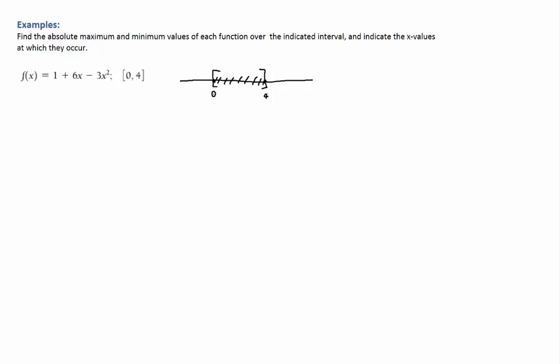When you have a closed interval and a continuous function, then there's a theorem that tells you that the function will achieve both its absolute max and its absolute min. So if you draw the graph of the function, then you're going to have a point at which the function will have the largest y-value possible, that would be the absolute max, and the smallest y-value possible, and that would be the absolute min.